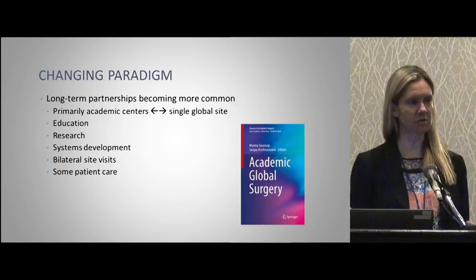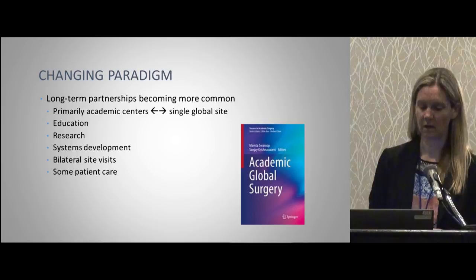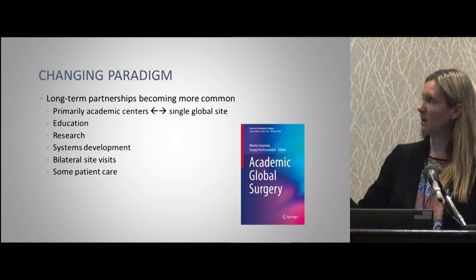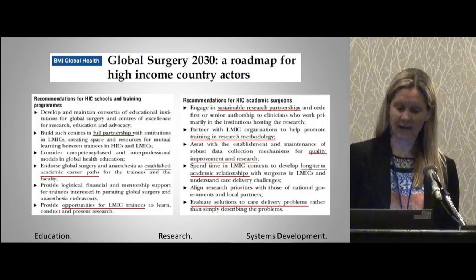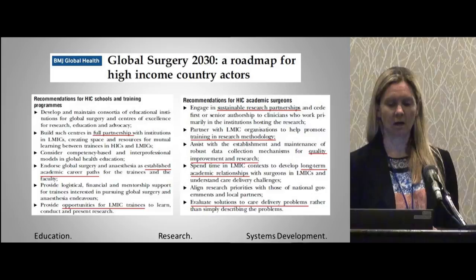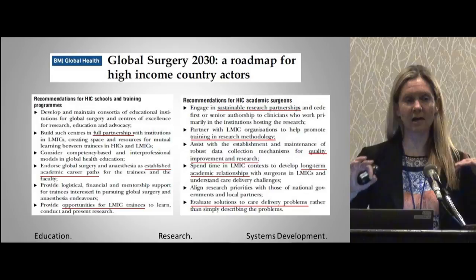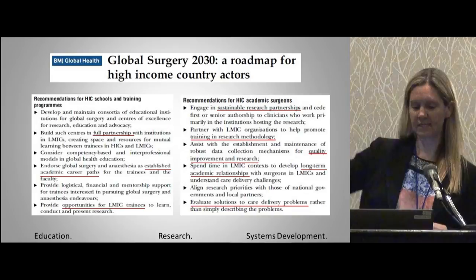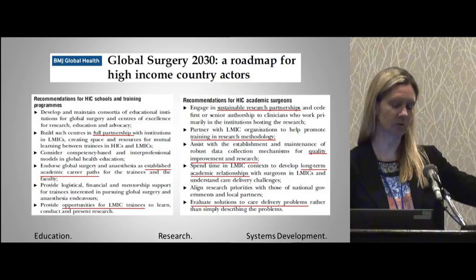But it's beyond just patient care — we're looking at the bigger picture. This is actually an article I really like that came out in the British Medical Journal within the last year or two: a roadmap for global surgery with goals for 2030. They put this out as a roadmap for high-income countries — what should we be doing? They break it down into recommendations for training programs and for academic surgeons, focusing on education, research, and systems development.